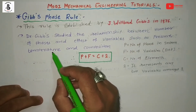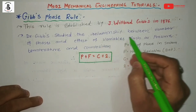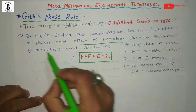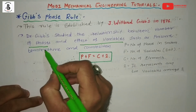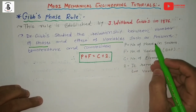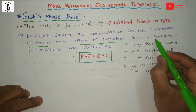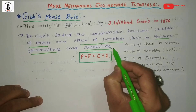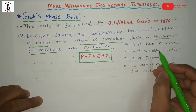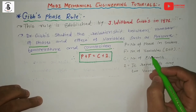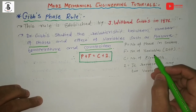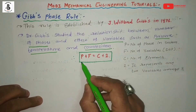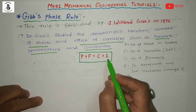Gibbs studied the relationship between the number of phases and the effect of variables. The two important parts are phase and variables. The variables include pressure, temperature, and composition — or you can say concentration, or simply weight percentage of compositions. This gives us the relation: P plus F equals C plus 2.